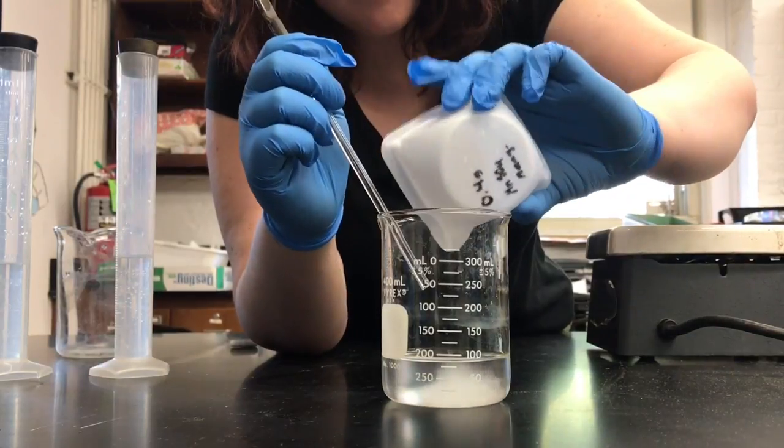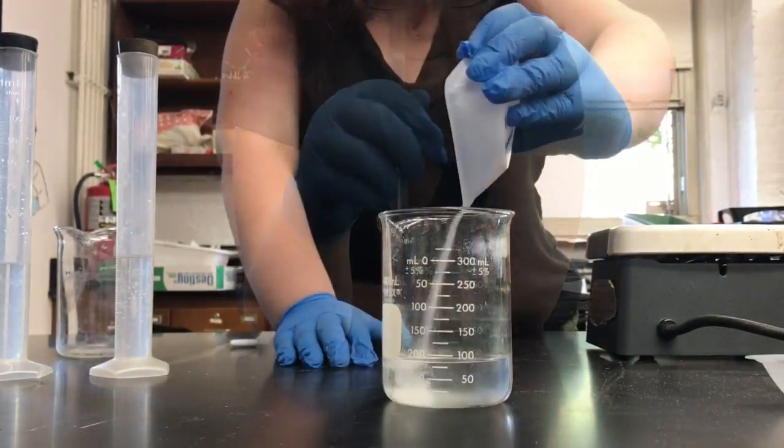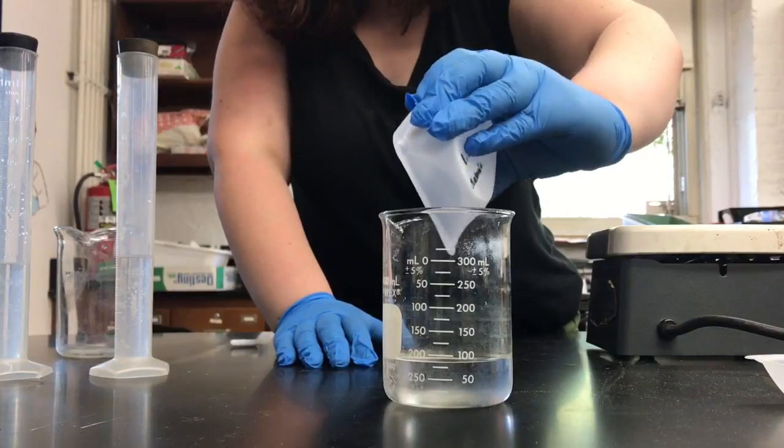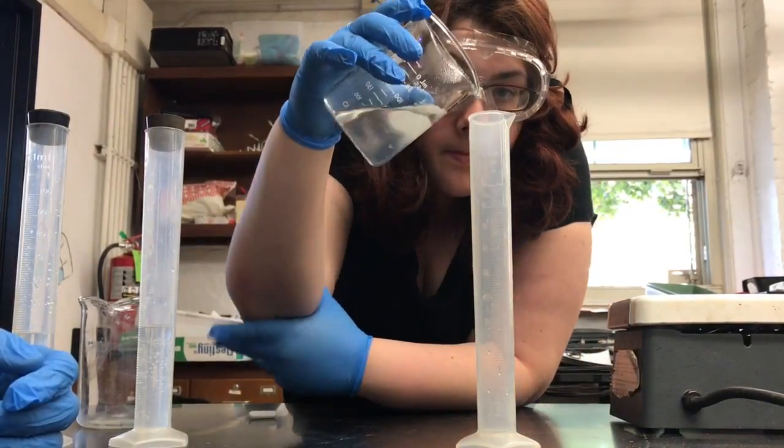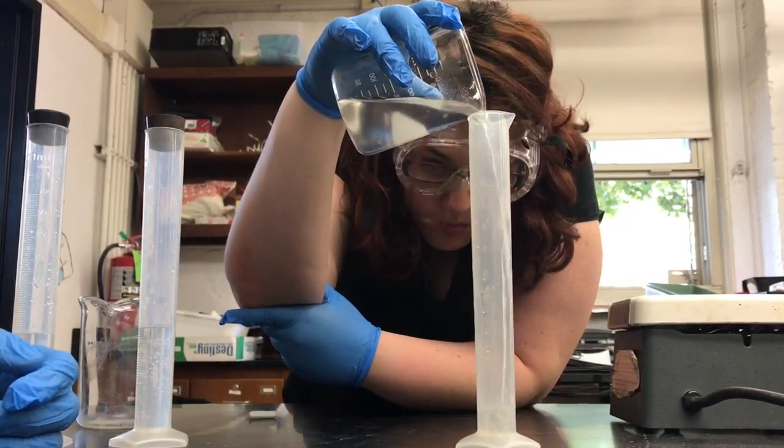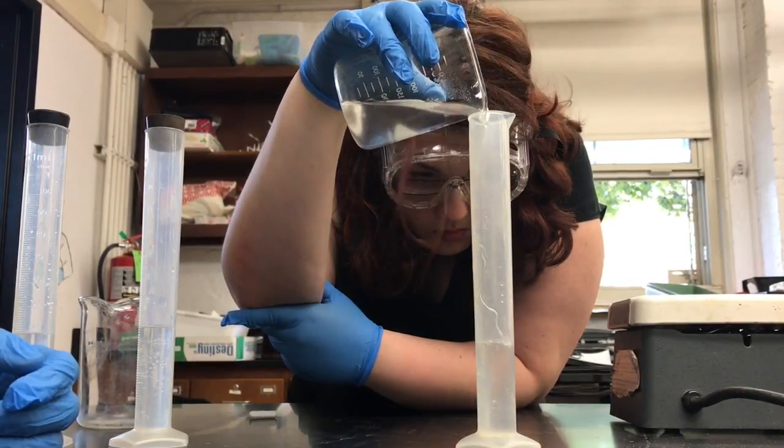Once the boiling water with starch has cooled down, you first add the manganese sulfate and stir. Once it's dissolved, you then add the malonic acid. Stir. You now add solution C to a graduated cylinder up to 40 milliliters. Once that is complete, you are ready to mix them all together.